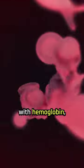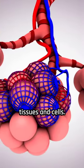Iron combines with hemoglobin, a protein in red blood cells that carries oxygen from the lungs to the rest of the body's tissues and cells.